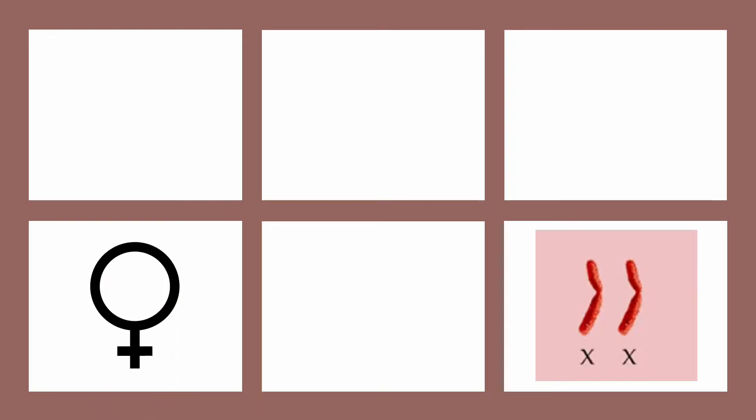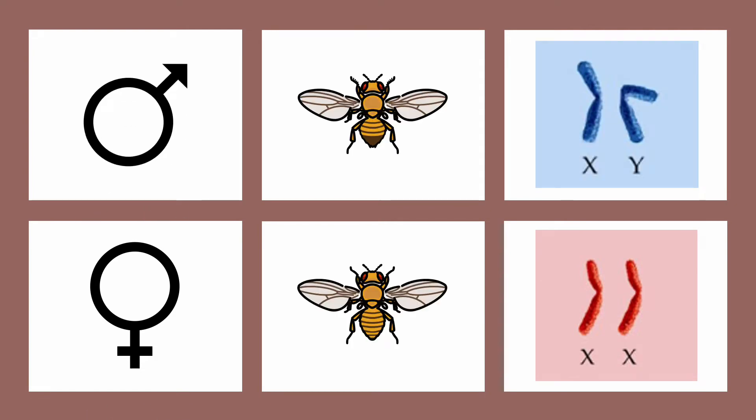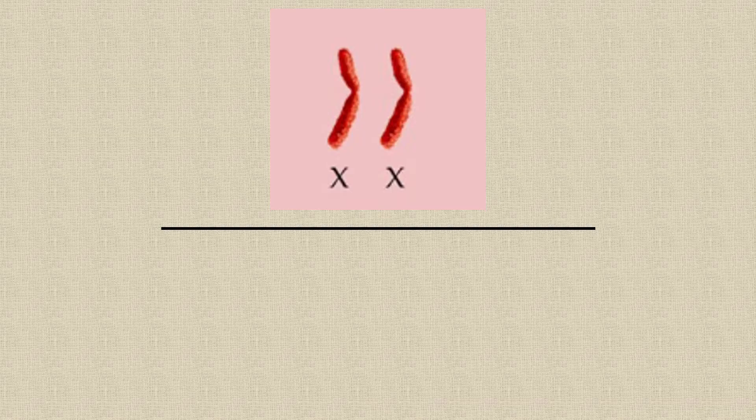A normal female fruit fly has two X chromosomes and males have an X and a Y. While in mammals the Y chromosome is the main factor in determining the male sex, in Drosophila it is more of a bystander.